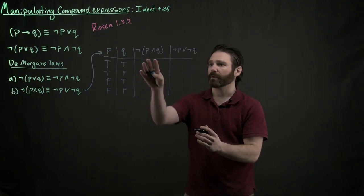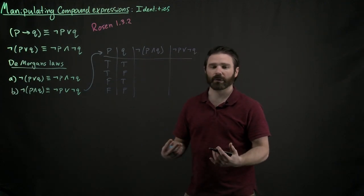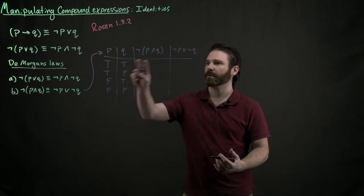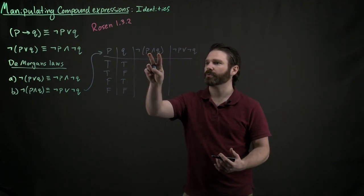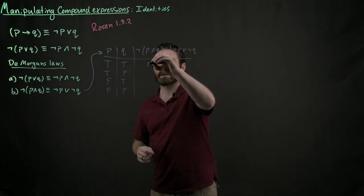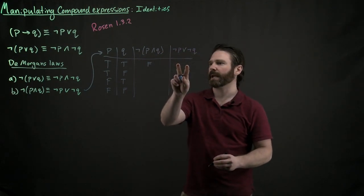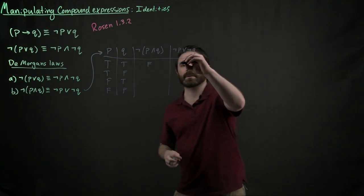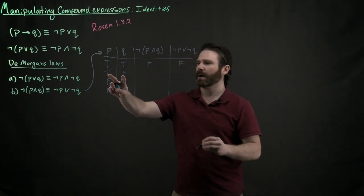So here we have a truth table for these couple of statements, and we can really quickly go through and fill it out. So first off in this first row, true and true is true, flip it, it becomes a false. There we go. Let's check this one out. Well, that flips it. So it's a false or a false. So that's also a false. On to the next row.